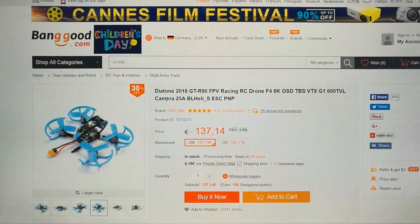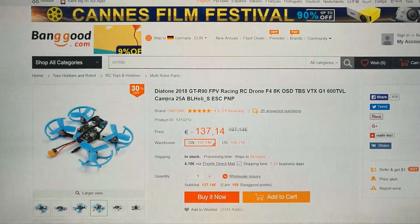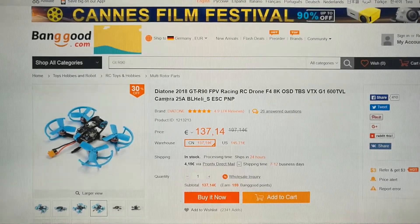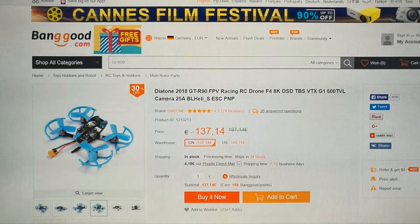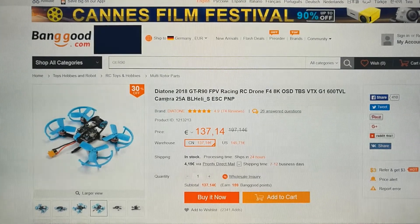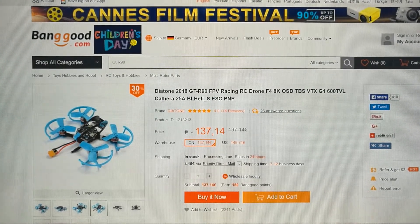As of today, you can purchase the Diatone GTR90 for around 135 euros or 145 US dollars at Banggood, for instance. And here the depicted photos seemingly still show the old version.